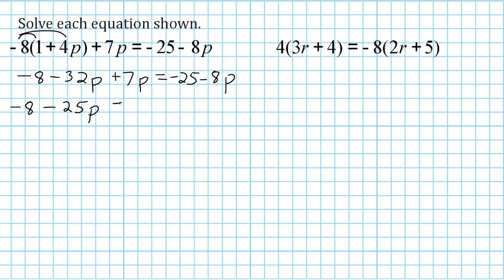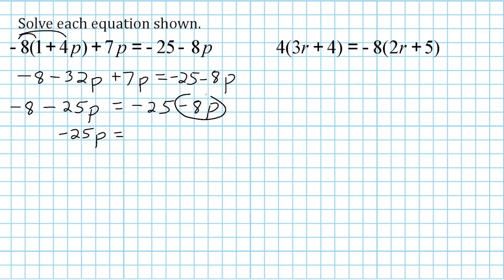We bring down the equal sign and minus 25 minus 8p on the right. Now we get variable terms on one side and constants on the other. We keep negative 25p on the left with the same sign, and move negative 8p to the other side by writing its inverse, positive 8p. Then we take the constant negative 8 from the left and move it to the right as positive 8. The right side already has negative 25.